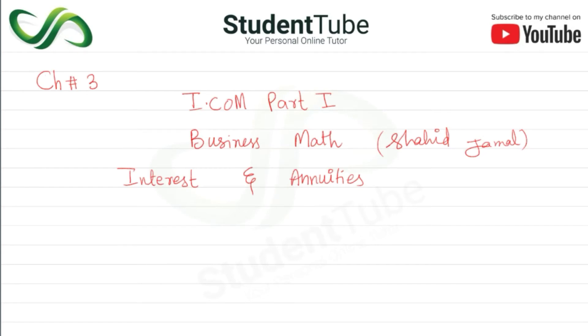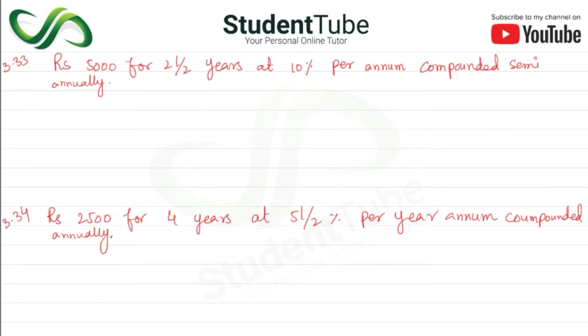Assalamu alaikum, welcome to Student Tube. Today's lecture is Chapter 3, I.COM Part 1, Business Math book of Shahid Jamal. The chapter is Interest and Annuities. Problem 3.33: Rupees 5000 for 2.5 years at 10 percent per annum compounded semi-annually.